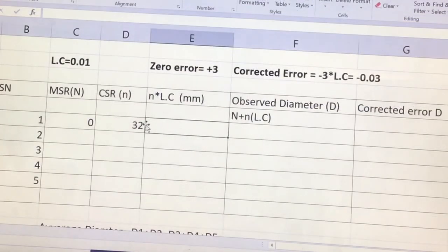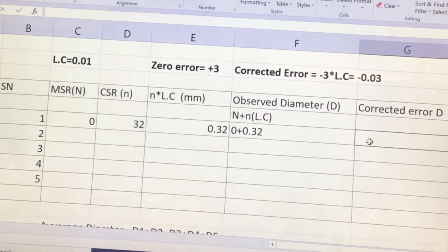So next we have N into LC. The N we have is 32 into LC is 0.01 which will be 0.32. And the observed diameter here is N, 0 plus N into LC is 0.32. So and the corrected, we have to subtract the correction one 0.03. So here it will be 0.32 minus 0.03 which is equal to, so 32 minus 3. So this is our first reading, 0.29.